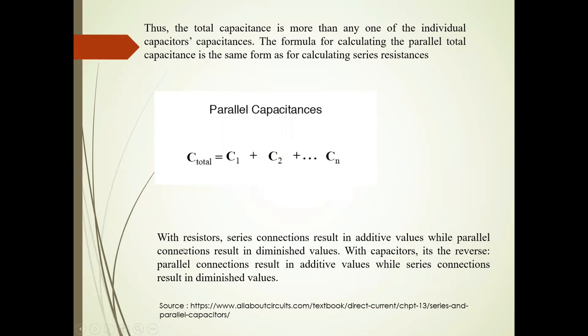With resistors, series connections result in additive values while parallel connections result in diminished values. But with capacitors, it's the reverse: parallel connections result in additive values while series connections result in diminished values.